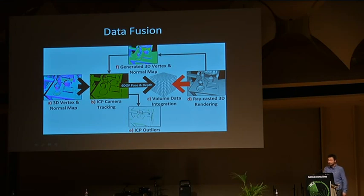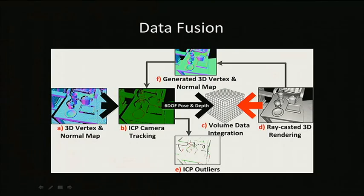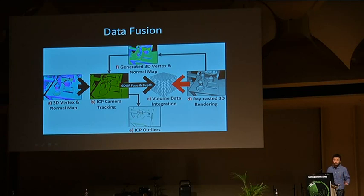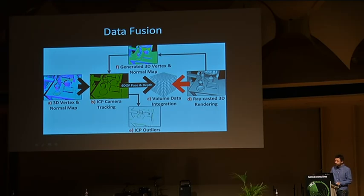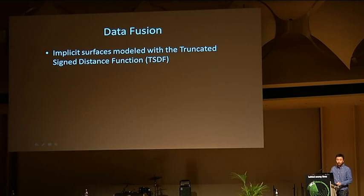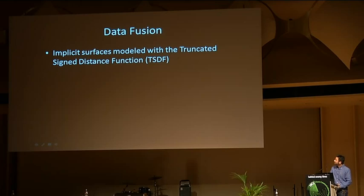The next part is integration of the data. Now we know where each depth image belongs spatially — we have a relative spatial reference of the current frame to the previous frame, so we can integrate it into a global model. Instead of using triangles in a polygon mesh, we work with a voxel model — a discrete grid like a three-dimensional array where we store information about the surface. We don't use an occupancy grid; we model surfaces as implicit surfaces.